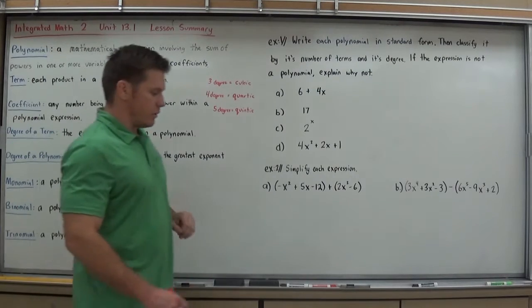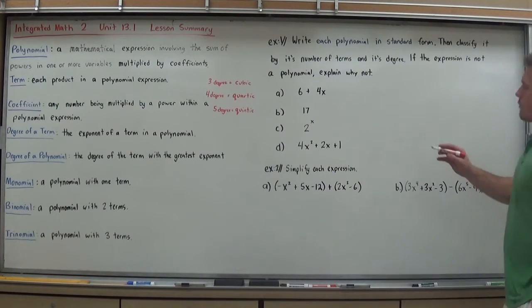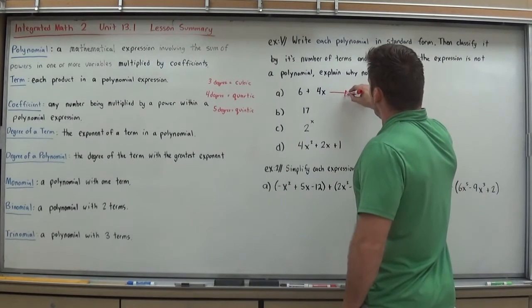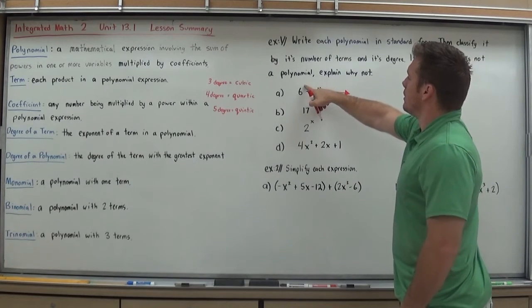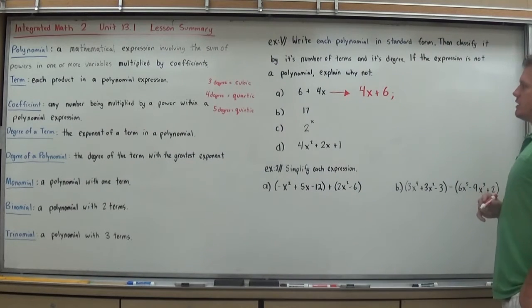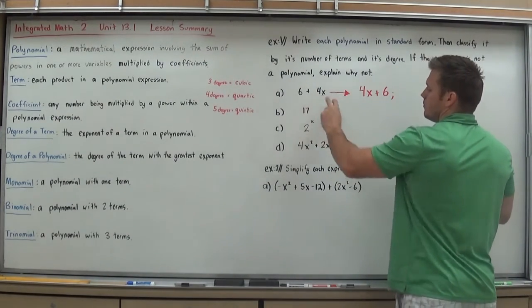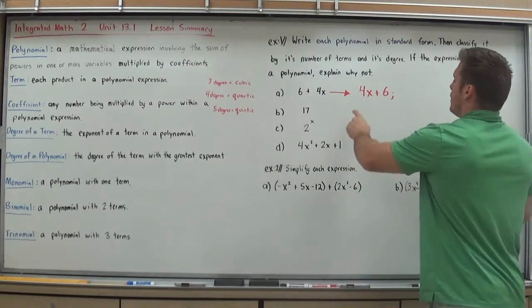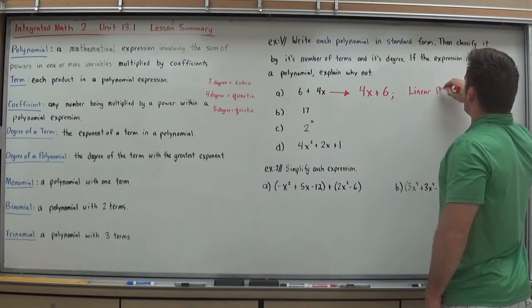Okay, now we've got the vocab down. Let's take a look at an example or two. It says, write each polynomial in standard form, then classify it by its number of terms and its degree. If the expression is not a polynomial, explain why not. So standard form, you learned this back in chapter 12. But the way you write something in standard form is you go highest degree to lowest. So x has a degree of 1, a constant has no degree. So standard form for this would look like that, 4x plus 6. Then it says, name it by its number of terms and its degree. Well, it has two terms, two terms being bi, so it's a binomial. And its highest degree is 1, which makes it linear. So this is a linear binomial.